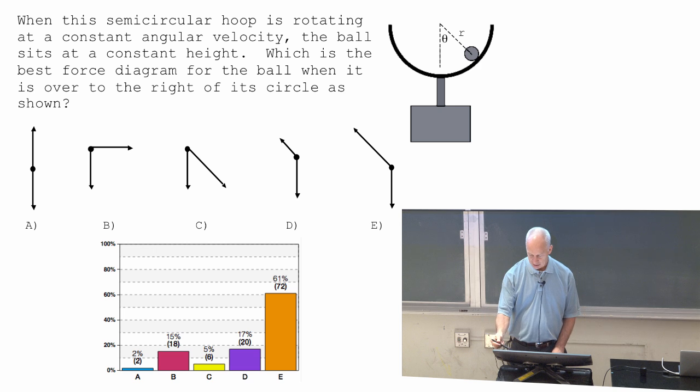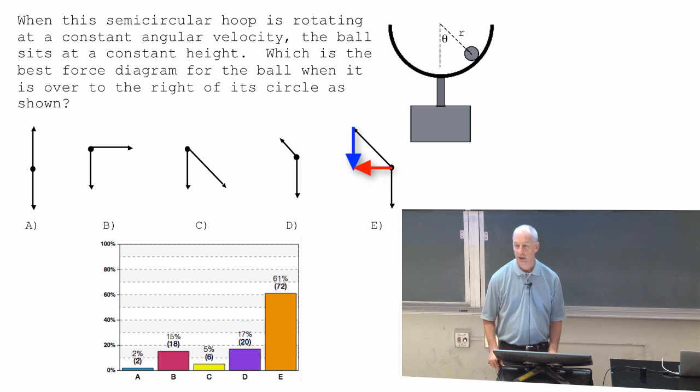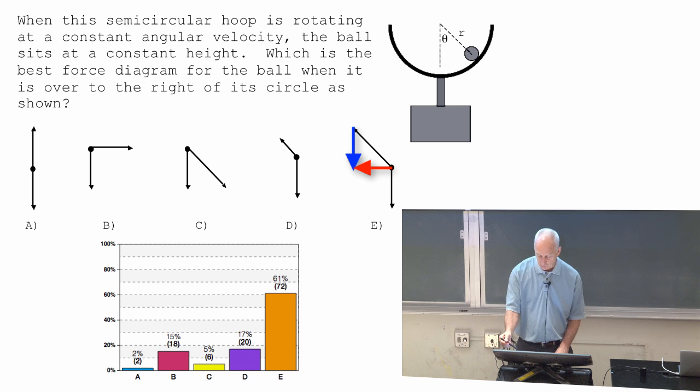And the net force, another thing to say is the net force should point to the left. If you add these two vectors together, you get a net force to the left. You can draw these vectors in all sorts of ways, but this is the only one with the net force pointing to the left.